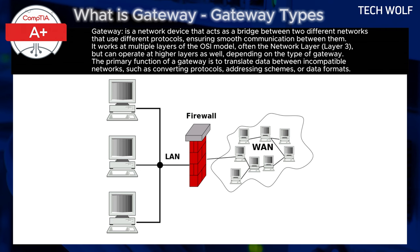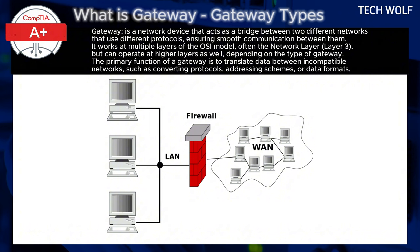A gateway would translate the internal protocols into TCP/IP and vice versa, allowing the company's internal systems to access the internet while keeping their network secure and operational. This is often seen in SOHO — small office, home office — environments, where an internal gateway enables communication between internal devices and the broader internet.